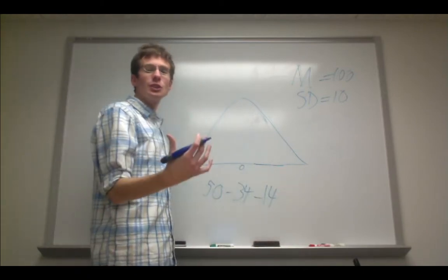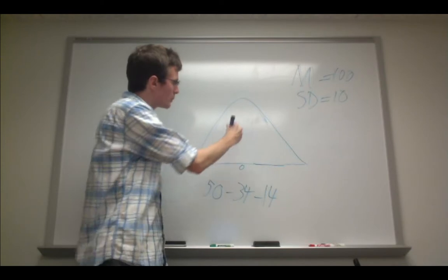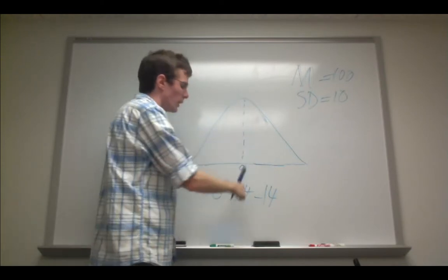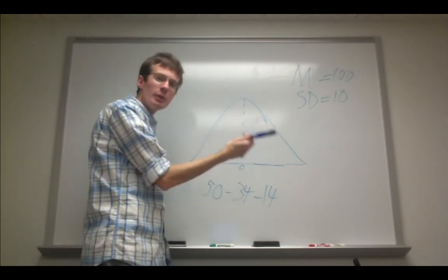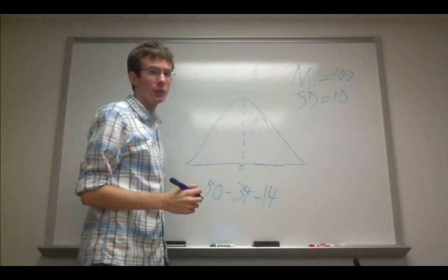What this means is that with a z-score of 0, 50% of this distribution lies to the left of 0, and 50% of the distribution lies to the right of 0.